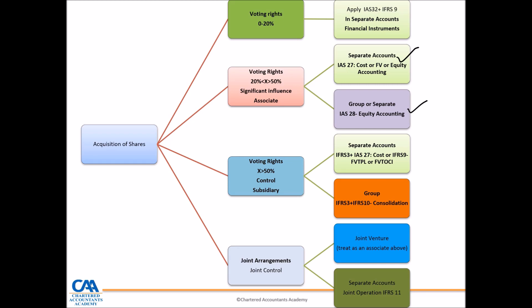If you acquire more than 50% and those voting rights give you control, that is a subsidiary. You need to consider how you account for it in the separate financial statements of the acquirer, which is the same under IAS27. You determine your cost under IFRS3, and recognize and measure your investment at that cost under IFRS9, or at fair value through OCI if that accounting policy is chosen. In the group accounts — the consolidation — IFRS3 and IFRS10 are applied. This is exactly where IFRS3 is connected to the subsidiary.